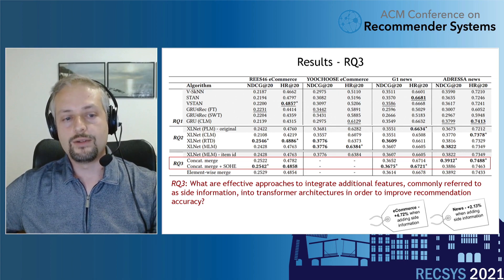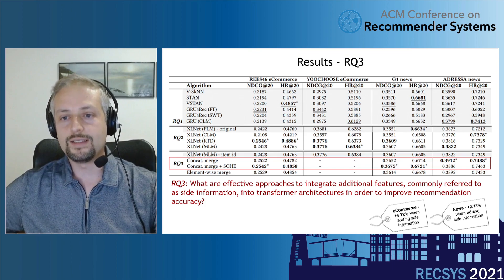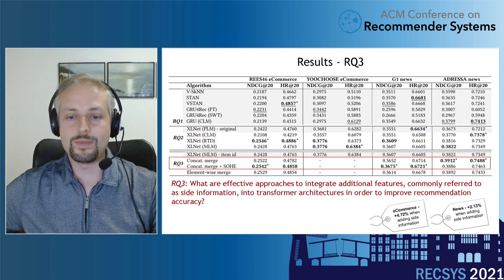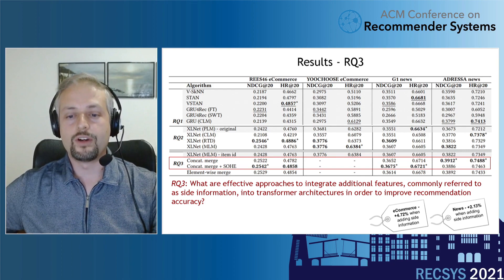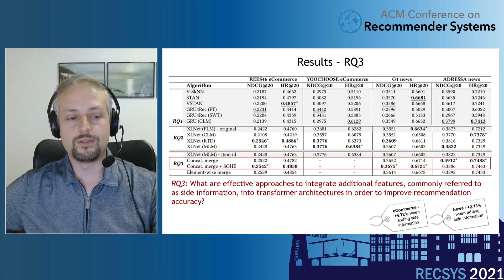Using XLNet MLM as the baseline with 100 hypertuning trials per configuration, we found that in general concatenation outperformed element-wise merging. In particular, concat merge with soft one-hot encoding — a technique representing continuous features as weighted averages of embeddings — was the most promising approach. This yielded over 4.72% improvement on e-commerce and more than 2% on the news dataset using just simple features.